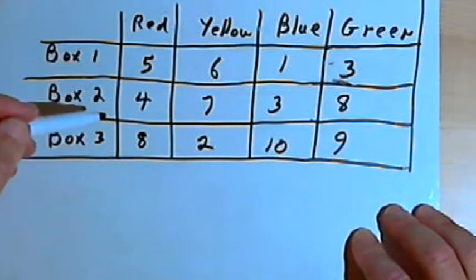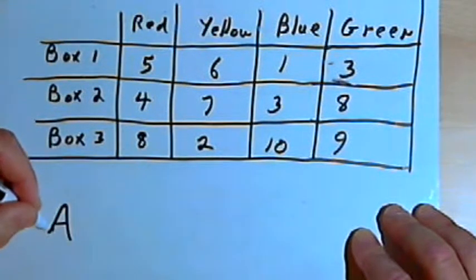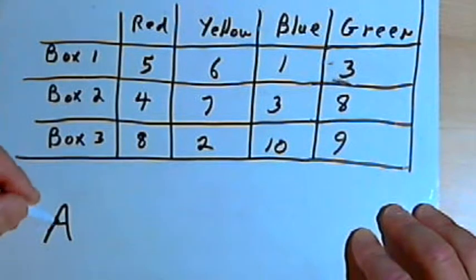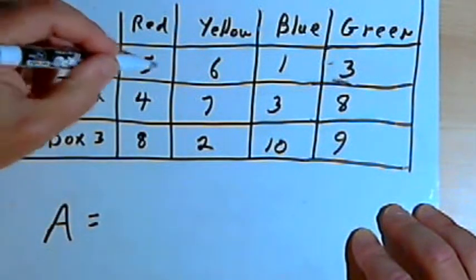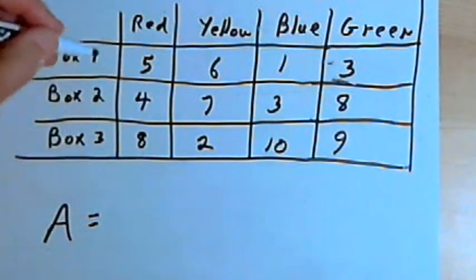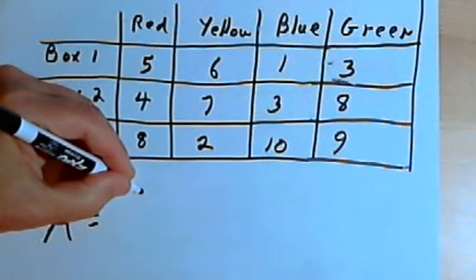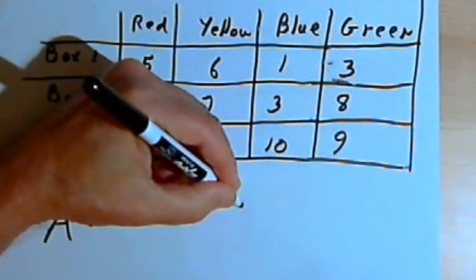If we wanted to make a matrix out of this, we could call this matrix A. We usually use capital letters to designate a matrix. Now I'm just going to take the information and make some rows and columns. So for box 1 I had 5, and then 6, and 1, and 3.